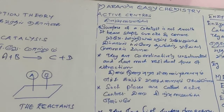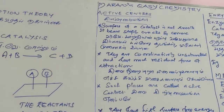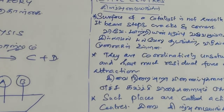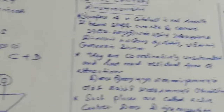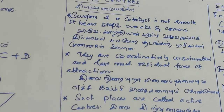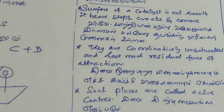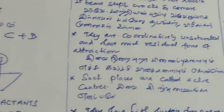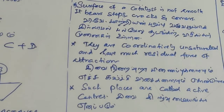The catalytic surface has active centers. These active centers are located at steps, cracks, and corners of the catalytic surface. The catalytic surface is not smooth — it has irregularities. At those irregular points, bonding is not uniform.